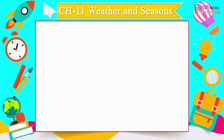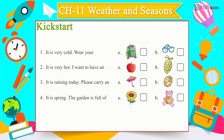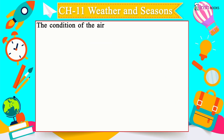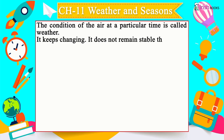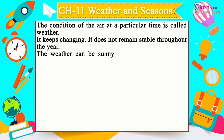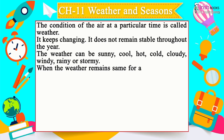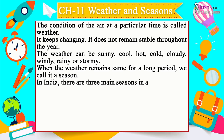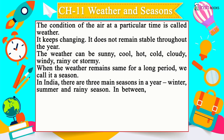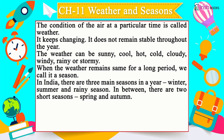Chapter 11: Weather and Seasons. The condition of the air at a particular time is called weather — it keeps changing and can be sunny, cool, hot, cold, cloudy, windy, rainy or stormy. When the weather remains the same for a long period, we call it a season. In India, there are three main seasons: winter, summer and rainy season, with two short seasons — spring and autumn — in between.